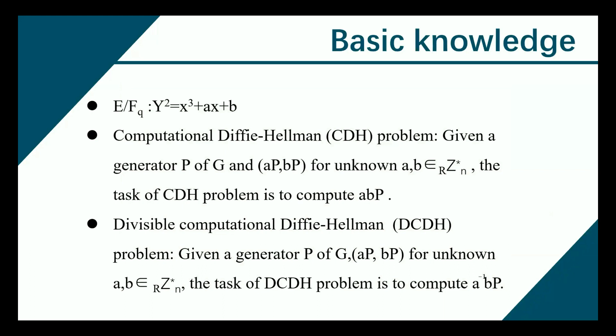The Computational Diffie-Hellman (CDH) problem means: given a generator P of a group G and given A·P and B·P for unknown A and B, the task of the CDH problem is to compute A·B·P. The Divisional Computational Diffie-Hellman (DCDH) problem means: given a generator P of G and A·P and B·P for unknown A and B, the task is to compute the modular inverse of A times B, then scalar multiply P.